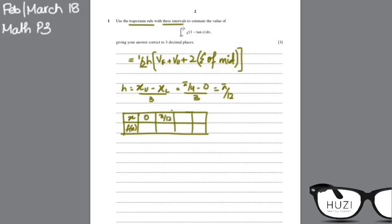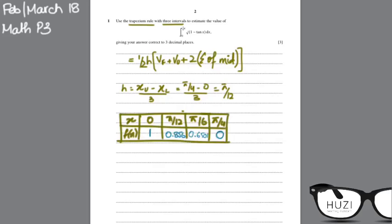Then 2π/12, that's π/6, and finally π/4. I calculate the values of the ordinates. This is what it turns out to be, and I'll also enlarge the table.